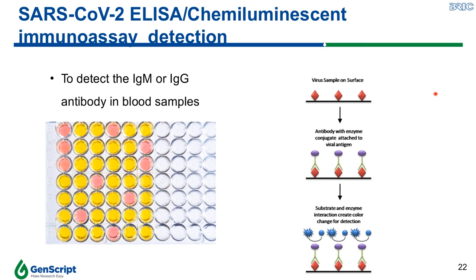ELISA is a plate-based technology that allows quantification and detection of substances including proteins, peptides, and antigens. In brief, the antigen must be immobilized on the plate and then conjugated with antibodies linked to an enzyme. Detection is done by assessing enzyme activity through incubation with a substrate to produce a measurable product such as a color change, indicating the presence of the substance in the sample. We can also modify the assay to detect host IgG or IgM antibodies in blood samples. The chemiluminescent immunoassay works on a similar principle as ELISA, but uses chemical probes to generate light emission in the chemical reaction.